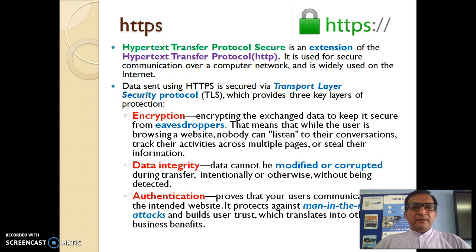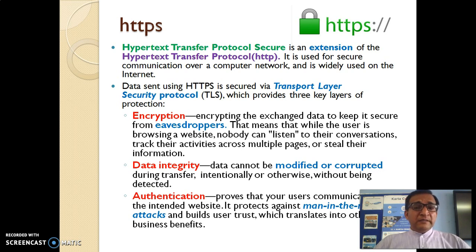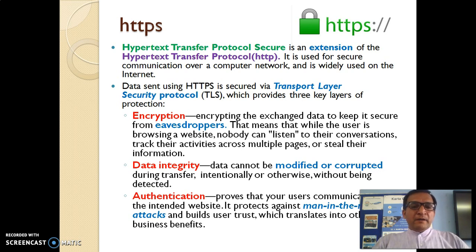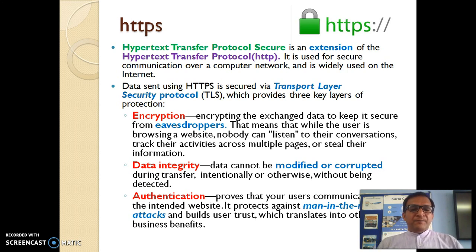Data sent using HTTPS is secured via Transport Layer Security protocols, which provide three key layers of protection: encryption, data integrity, and authentication. Encryption encrypts the exchanged data to keep it secure from eavesdroppers — people who listen in on communication between a user and a website or between two individuals interacting on the internet. Data integrity ensures that data cannot be modified or corrupted during transfer, intentionally or otherwise.